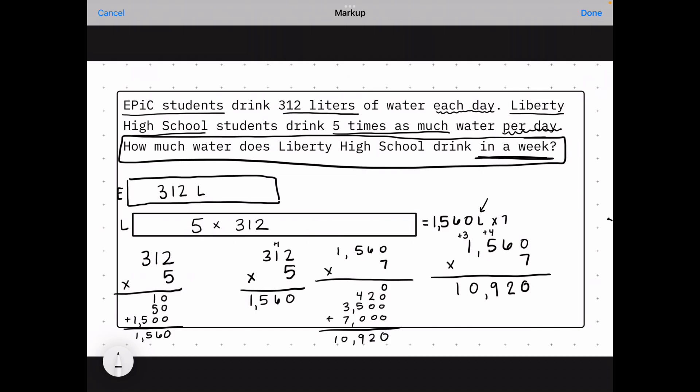Now I can go back and make sure that I've answered my question. How much water does Liberty High School drink in a week? It's 10,920 liters. Make sure you have that label because we're talking about a word problem here.